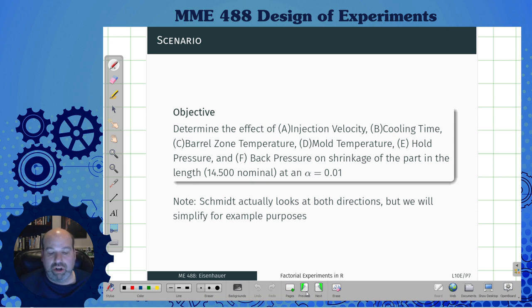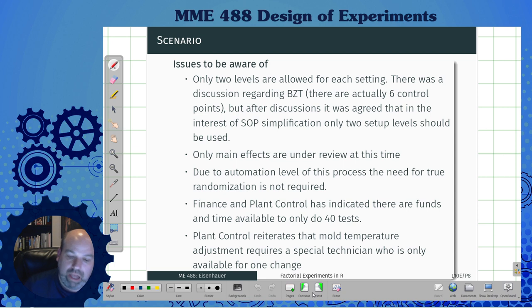The objective is to determine the effect of injection velocity, which we're going to call A, the cooling time B, the barrel zone temperature C, the mold temperature D, the hold pressure E, and the back pressure F. The shrinkage of the part wants to be staying at 14.5 nominally at an alpha significance of 0.01. Schmidt actually looks in both directions, but we're going to simplify it for the example purposes. We're just going to look at length to make the problem a little bit easier to understand.